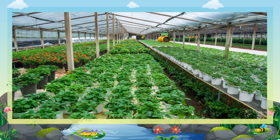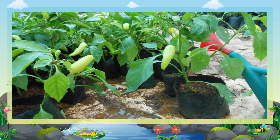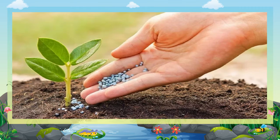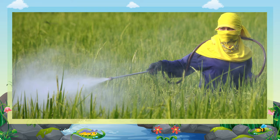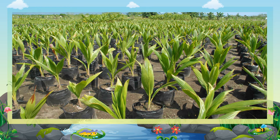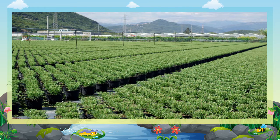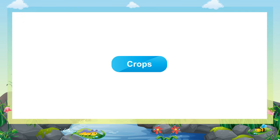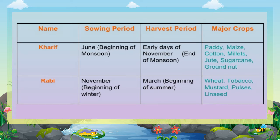Three: Commercial farming. The main characteristic of this type of farming is the use of higher doses of modern inputs, for example high yielding variety seeds, chemical fertilizers, insecticides, and pesticides to obtain higher productivity. Plantation is also a type of commercial farming, in which a single crop is grown on a large area.